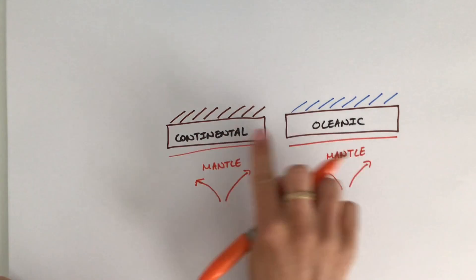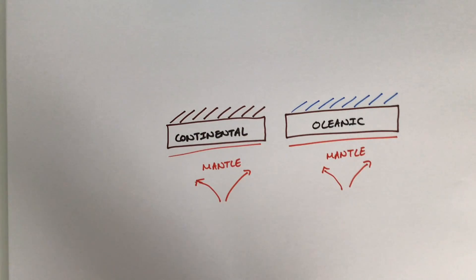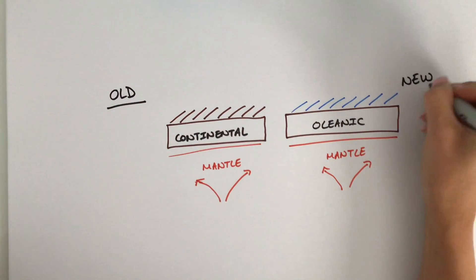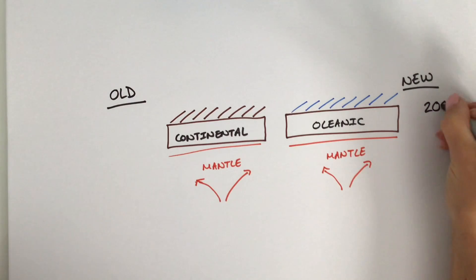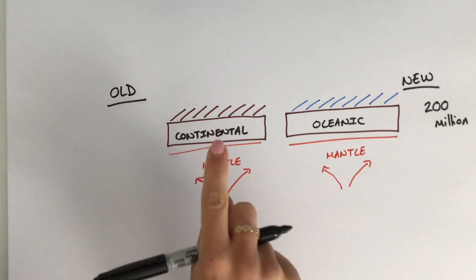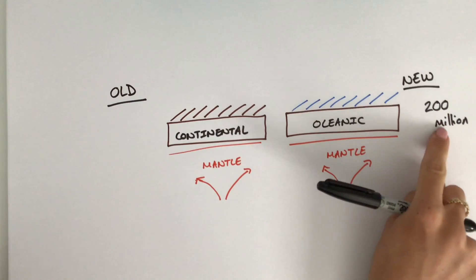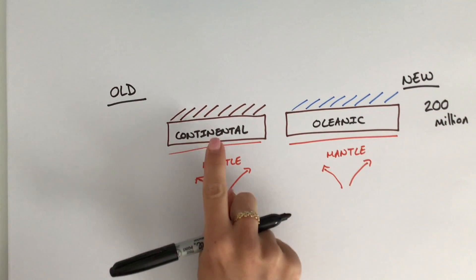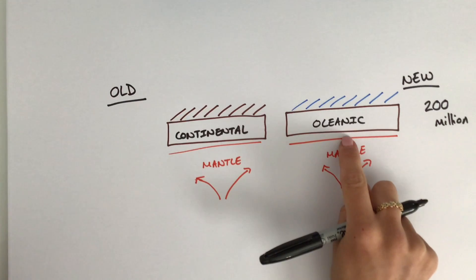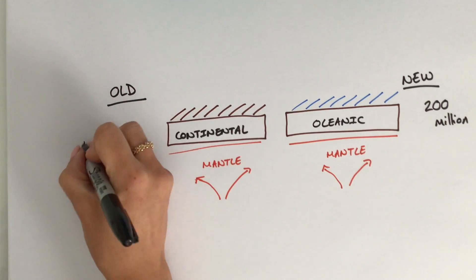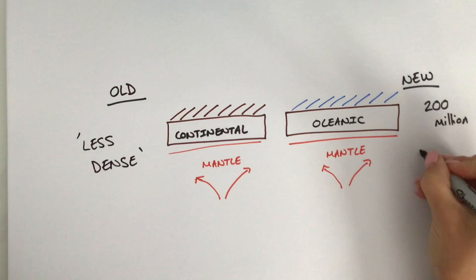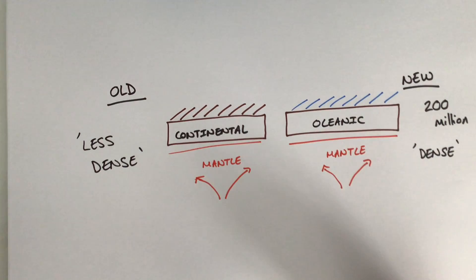What's really interesting about these two types of crust is that they're a little bit different. Your continental crust tends to be the older one, whereas your oceanic crust tends to be newer — and when I say newer, I'm talking like 200 million years old, but that's still newer compared to continental. Your continental crust is also made up of igneous, metamorphic, and sedimentary rocks, whereas oceanic crust tends to be made of igneous rock. Continental crust tends to be less dense — not as heavy — whereas oceanic crust tends to be very dense, and that's important when we look at the different types of plate boundaries.